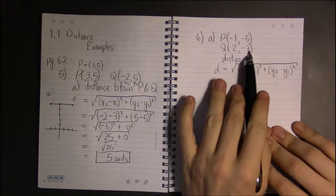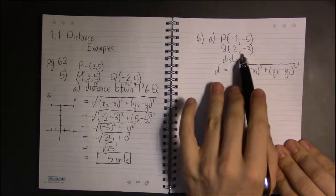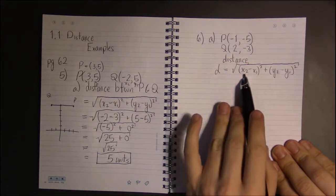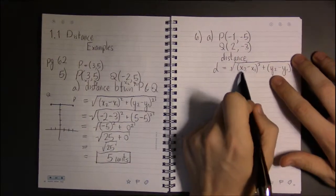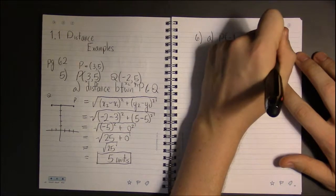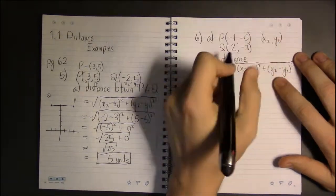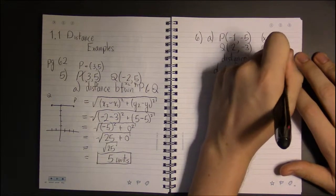Again, it doesn't really matter which one you pick as x2 or x1, just have to be consistent in your labeling. Let's try it out. Let's switch it up a little bit. This time P is going to be our (x2, y2) point and Q is going to be our (x1, y1) point.